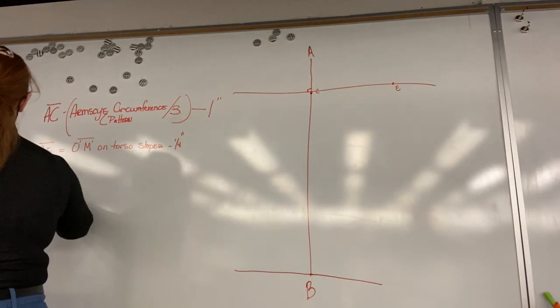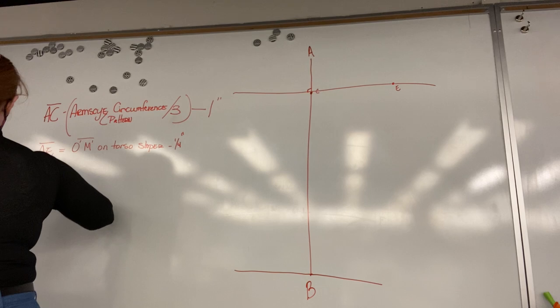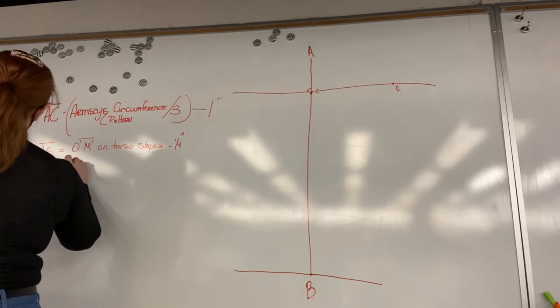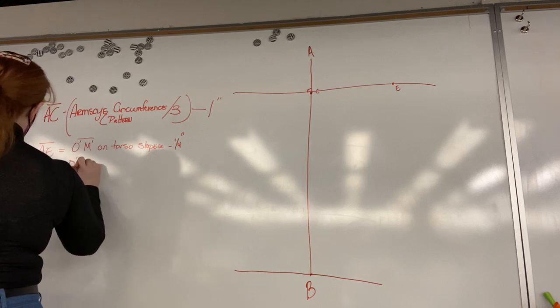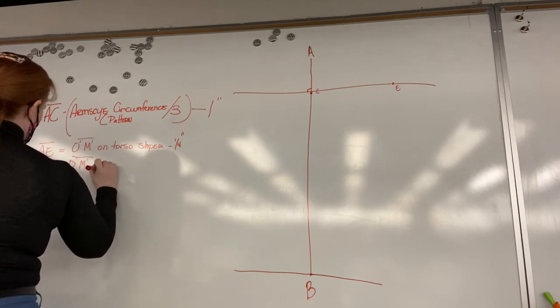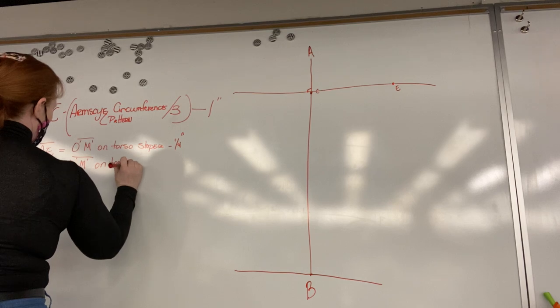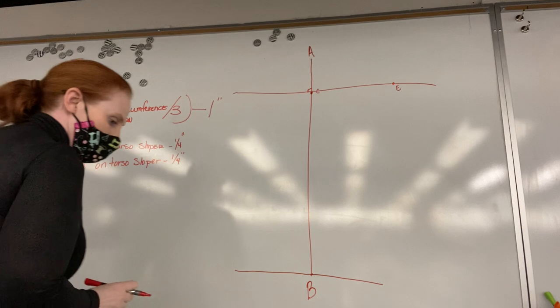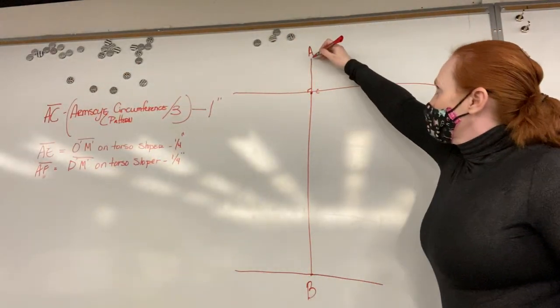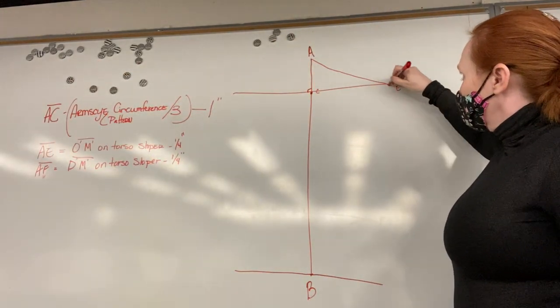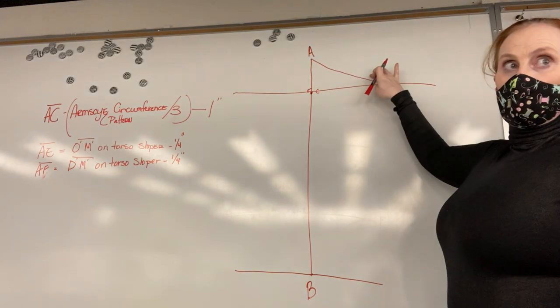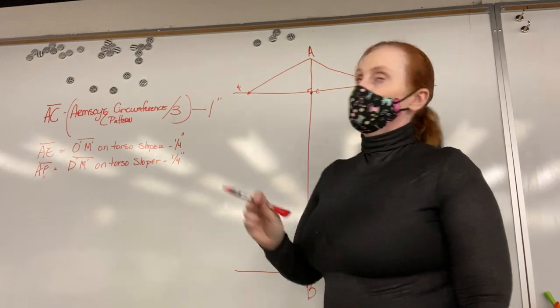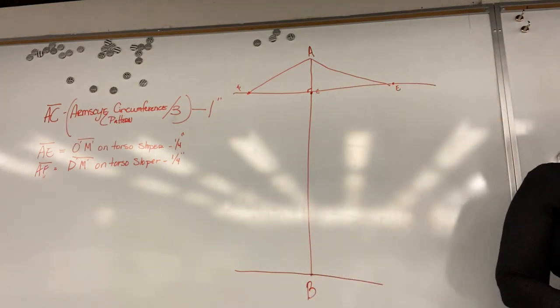So that means you'll start at A. And A to F going the opposite direction equals D junior to M junior on torso, minus the same quarter of an inch. So that means you'll start at A. This line here needs to equal that distance. And same over here. Does that make sense?